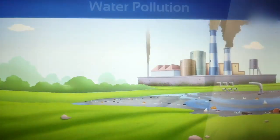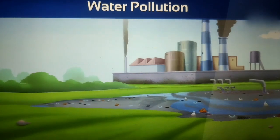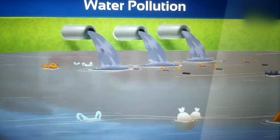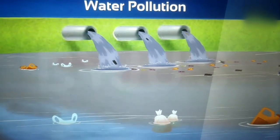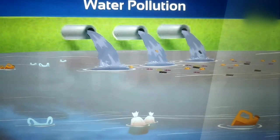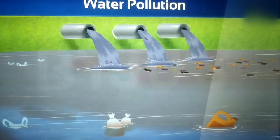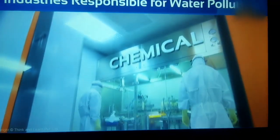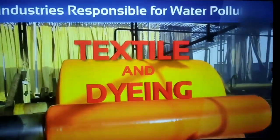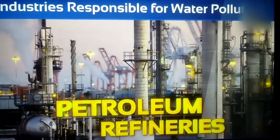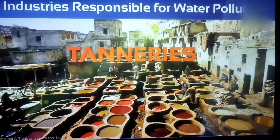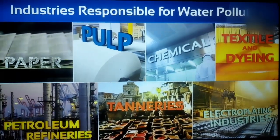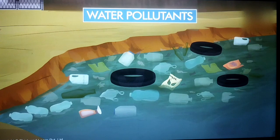Many industries are responsible for the contamination of water. Many industries discharge organic and inorganic industrial wastes and effluents without treatment directly into water bodies. Industries processing paper, pulp, chemical, textile and dyeing, petroleum refineries, tanneries, and electroplating industries let out untreated pollutants into the water bodies.